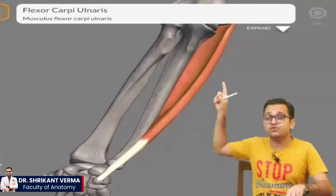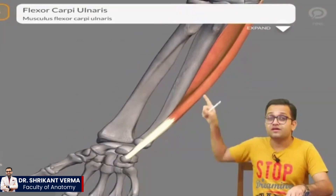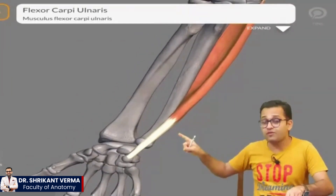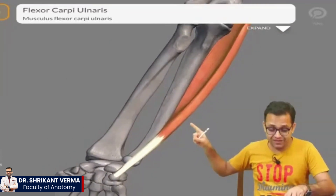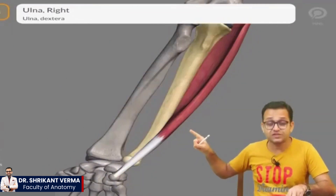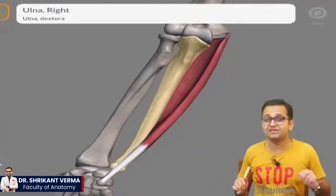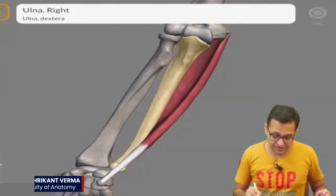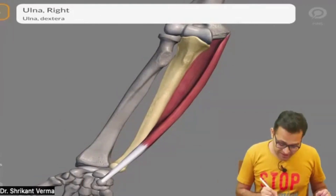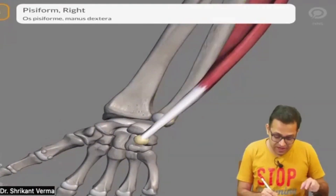Cut this muscle and look for another one. It is taking origin from the flexor point, running towards the carpal bone — not towards the radius but towards the ulna — so this is the flexor carpi ulnaris. It is making one seed-like bone.